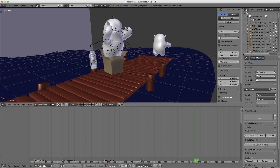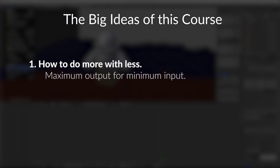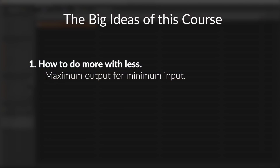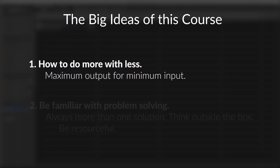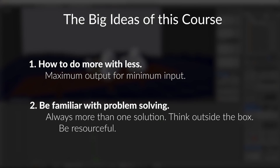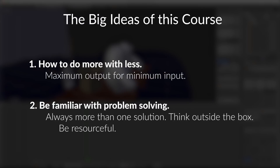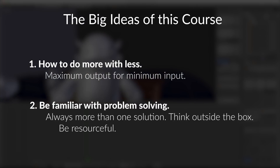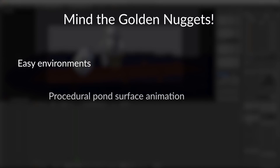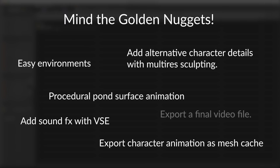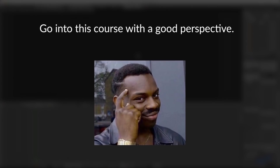Rather, I want you to learn with the bigger picture in mind. I want you to learn things like how to do more with less — in other words, maximum output for minimum input, which is a crucial skill to have when producing animations as a small team or by yourself. I also want you to learn how to be familiar with problem solving. With computer graphics and Blender, there's always more than one way to skin a cat. Effective digital artists are open minded — they think outside the box and they're resourceful. Those two concepts are the most important things to learn from this course, and within those concepts there's a ton of tips and tricks throughout that you can store in your mental toolbox and apply to your own animated projects.